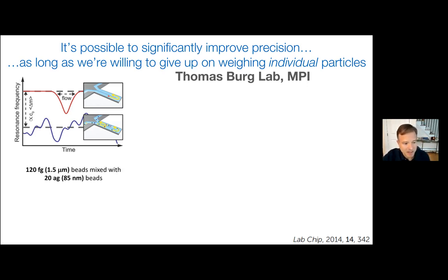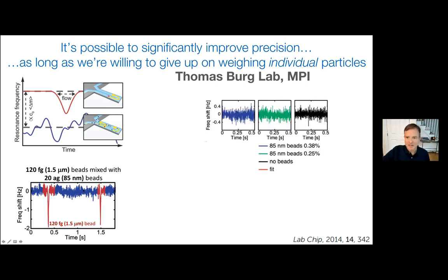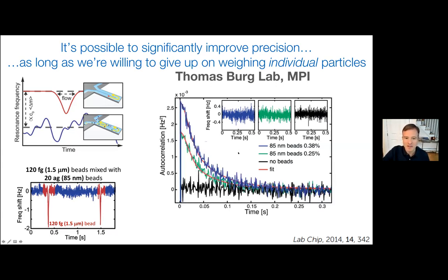He took heavy 1.5 micron polystyrene beads that you can easily resolve, mixed with small 20-attogram particles that you couldn't. The large bead peaks are very clear; the small beads are somewhere in the background noise. Looking at slightly different data: black is no beads, green is some beads, blue is a higher concentration. You can squint and barely infer a difference. But when Tomas takes the autocorrelation of each signal and plots it, there's a very clear difference — at time zero, this represents the magnitude of the noise, and you can clearly see higher concentration giving a larger autocorrelation value.